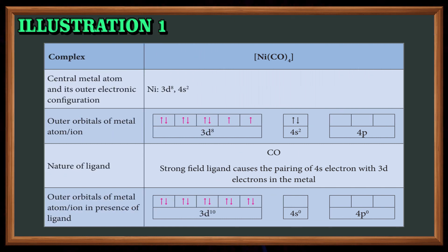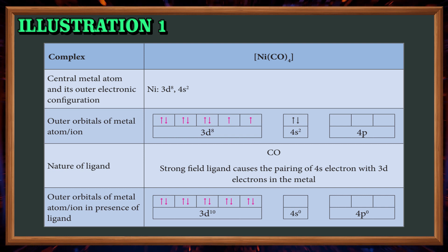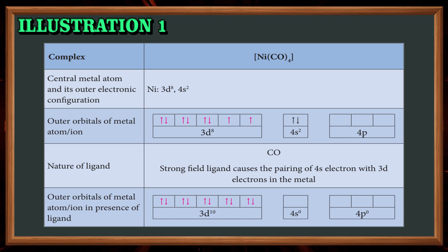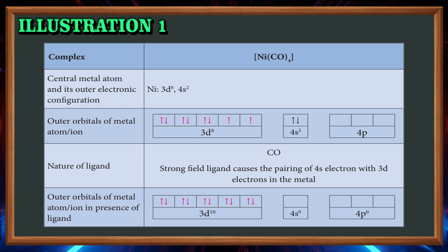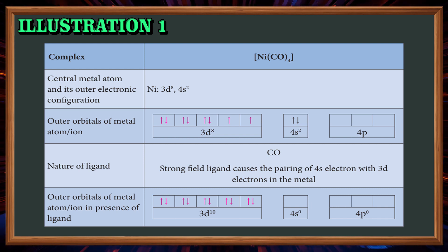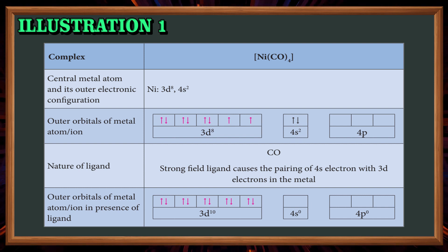Let us illustrate the Valence Bond Theory with examples. Illustration 1: the complex nickel tetracarbonyl, Ni(CO)4. The central metal atom nickel has outer electronic configuration 3d8, 4s2. The d orbital has 5 cells and the s orbital has 1 cell. For 3d8, first fill one electron in each cell, then fill the second electron in the remaining 3 cells, and fill 2 electrons in the s orbital cell.